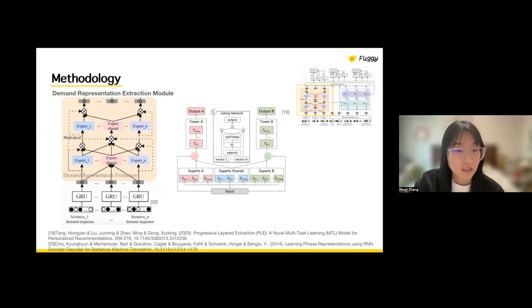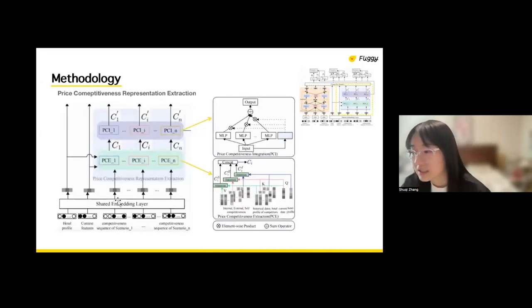And for the PCRE, it is composed of PCE and PCI two parts. The structure of PCE is at the bottom right corner. PCE is designed to capture price competitiveness from three dimensions, including internal, external and the listing self-competitiveness. And inspired by MOE, we designed PCI, which can better integrate the three competitiveness representation and extract deeper information through multiple MLPs.